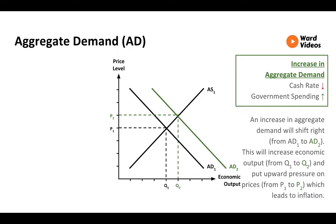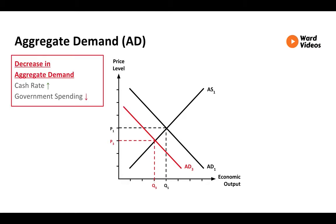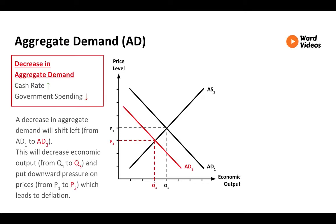This will increase economic output from Q1 to Q2 and put upward pressure on prices from P1 to P2, which leads to inflation. During an upswing, the government wants to decrease aggregate demand. The RBA will increase the cash rate, which increases interest rates, which decreases disposable income, while the government will decrease government spending. A decrease in aggregate demand will shift the curve left from AD1 to AD3, decreasing economic output from Q1 to Q3 and putting downward pressure on prices from P1 to P3, which leads to deflation.